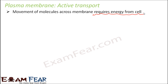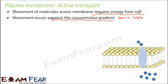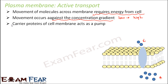Since molecules will not naturally move from lower to higher concentration, extra energy must be spent — and that energy comes from the cell. Active transport occurs against the concentration gradient, from a region of low concentration to a region of high concentration. Carrier proteins act as pumps, pumping molecules in that direction.